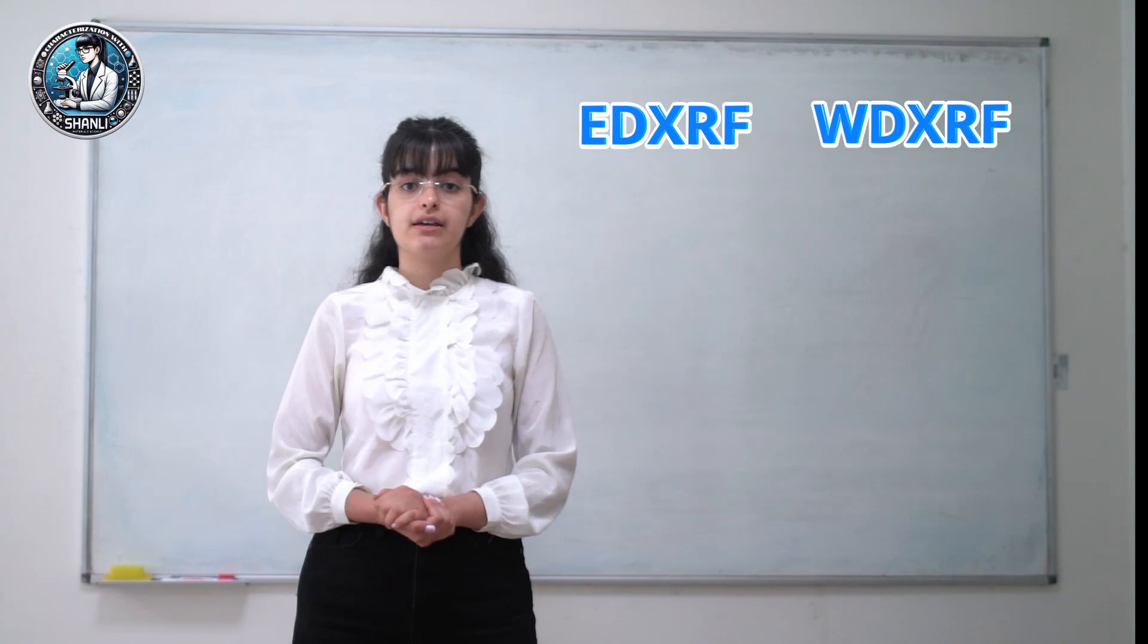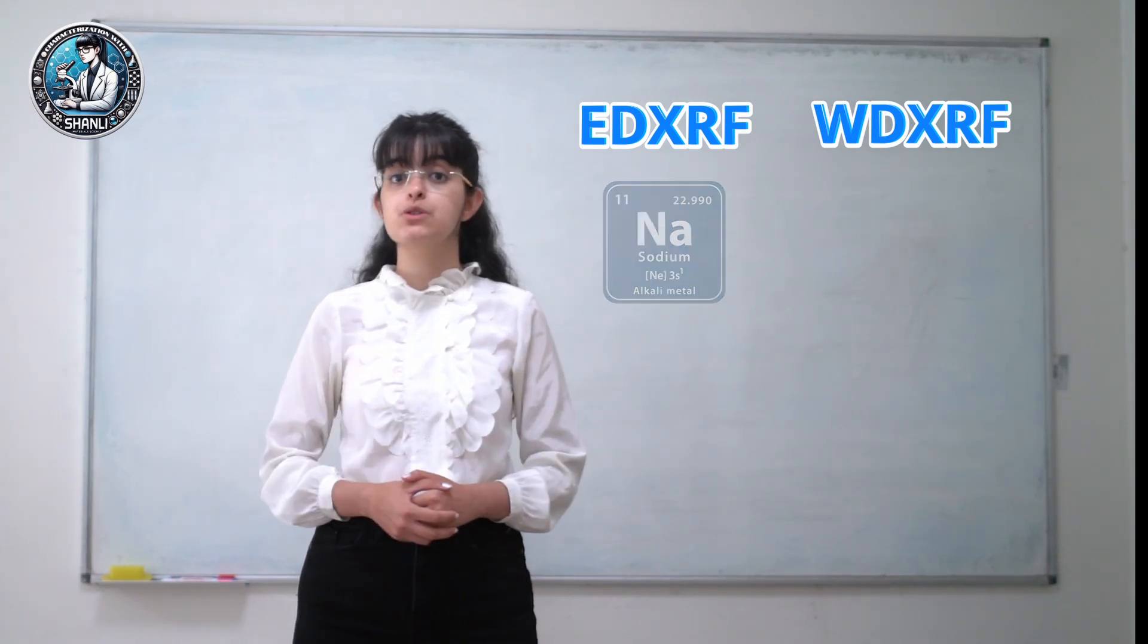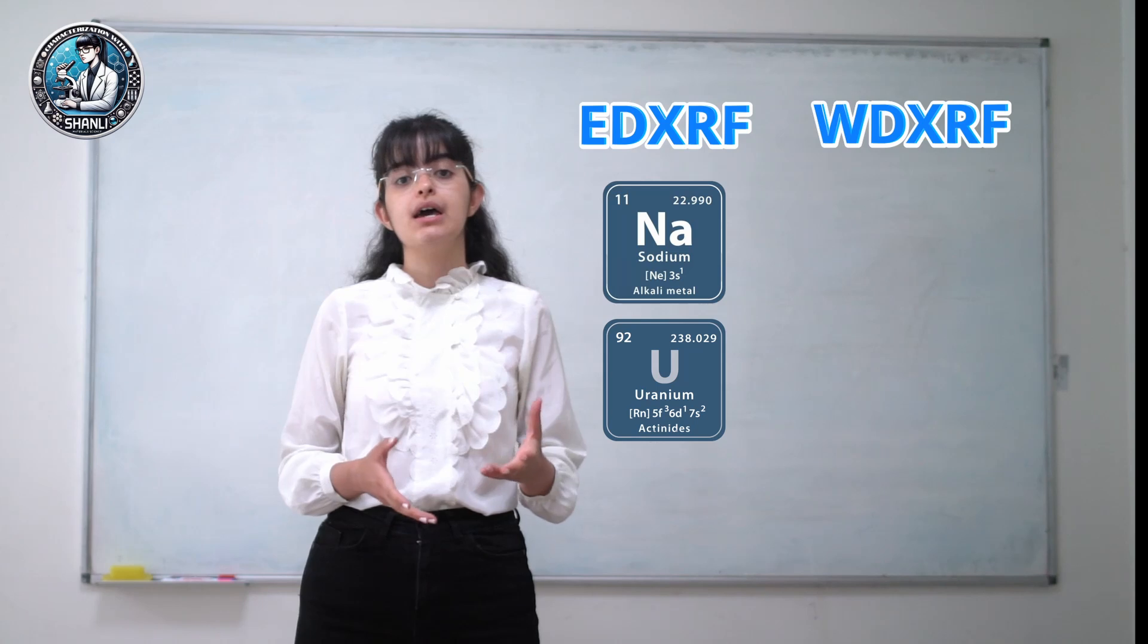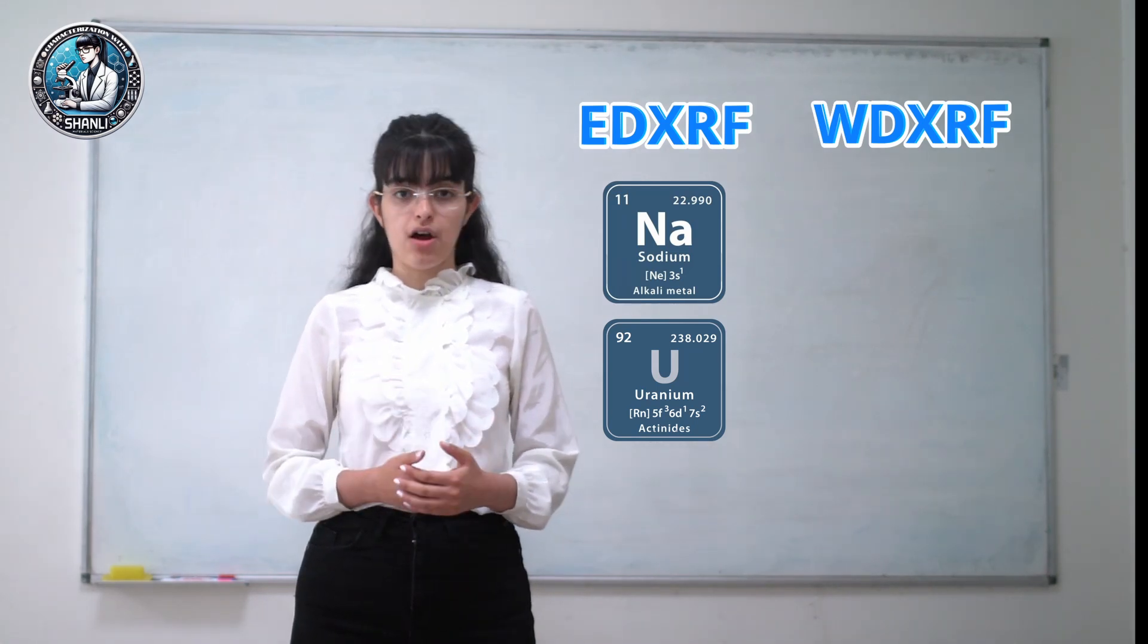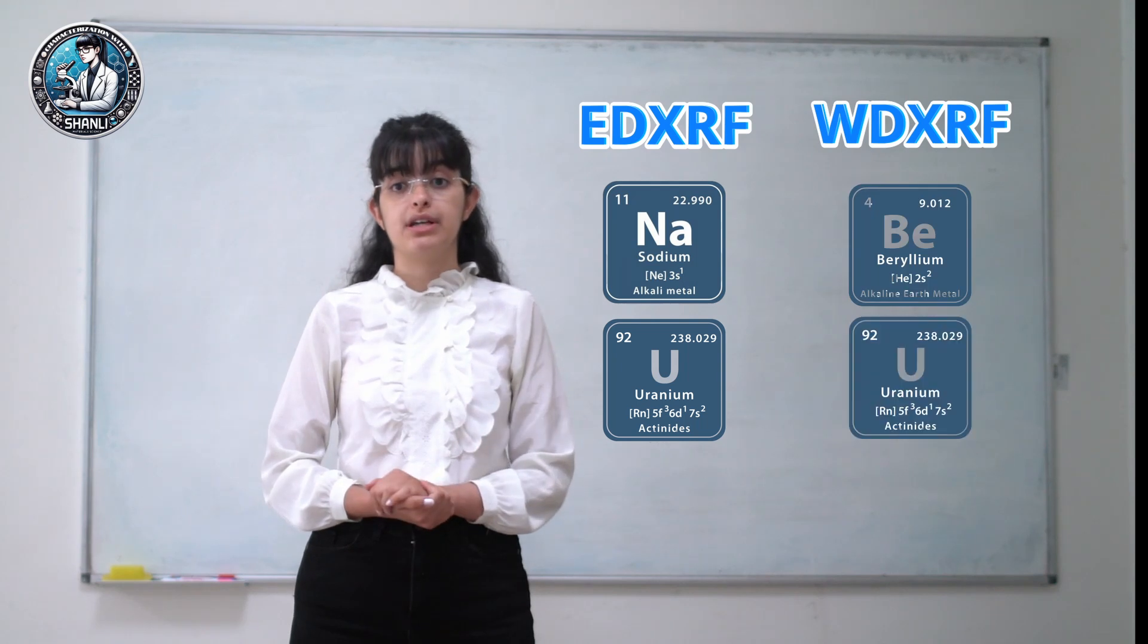For example, EDXRF typically enables the detection of elements ranging from sodium to uranium. However, the WDXRF offers an even broader range of elements from beryllium to uranium.